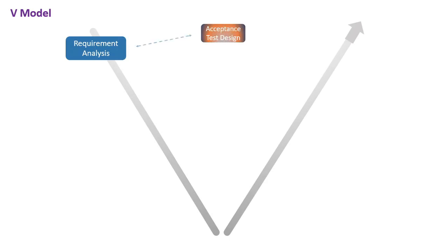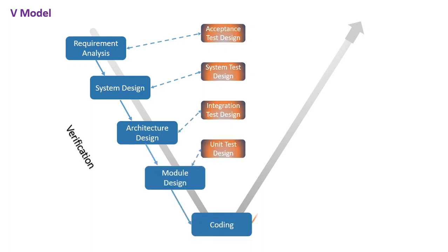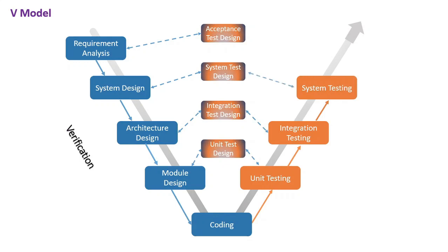Let us see the representation of different phases of V-Model. Under the V-Model, the corresponding testing phase of the development phase is planned in parallel. There are verification phases on one side of the V and validation phases on the other side. The coding phase joins the two sides of the V-Model.